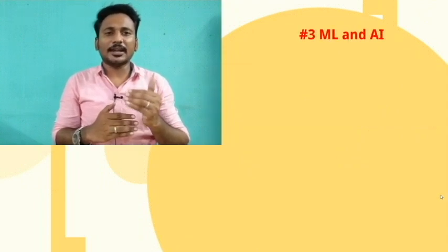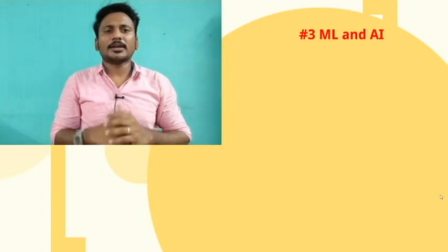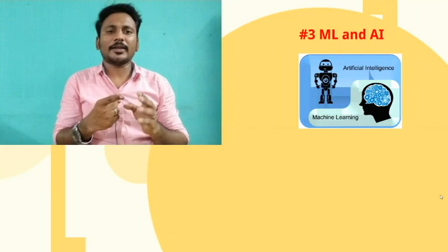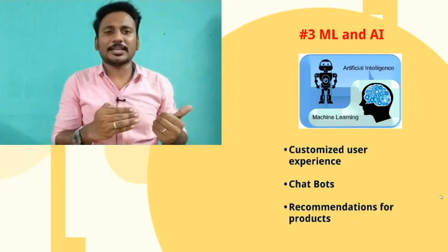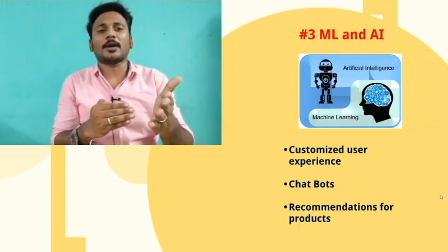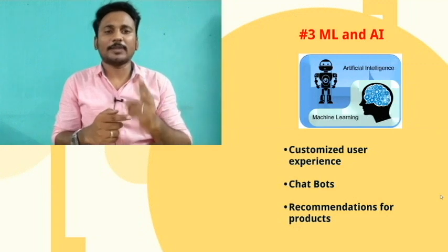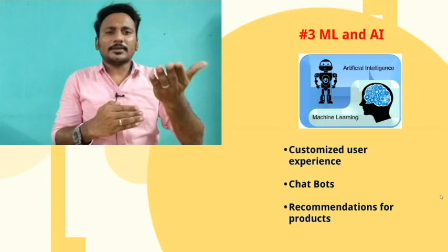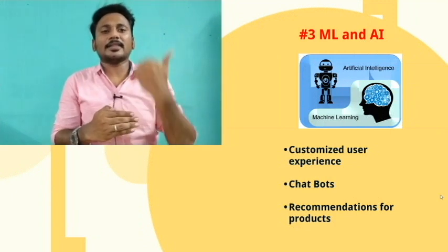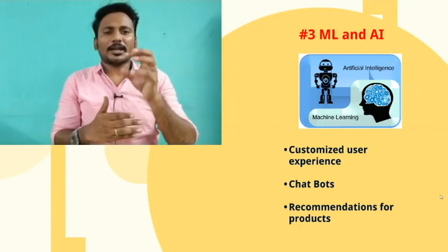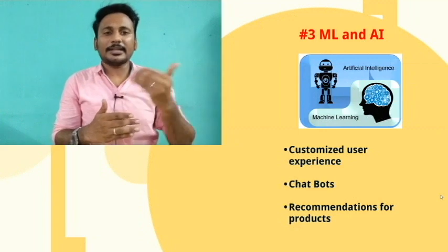The third thing is an advanced concept: implementing machine learning and AI in web development. There are three use cases. First is customized user experience — based on a user's browser history and preferences. Second is chatbots — a user can interact and get responses. Third is recommendations — like Amazon showing what products you are using and recommending related products.